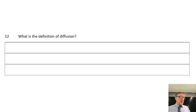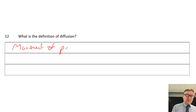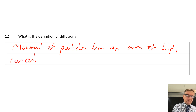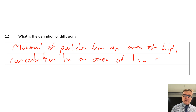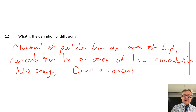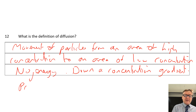Number twelve: what is the definition of diffusion? It is the movement of particles from an area of high concentration. There is also no energy used, and it is down a concentration gradient. A good name for no energy used is that it's a passive process.